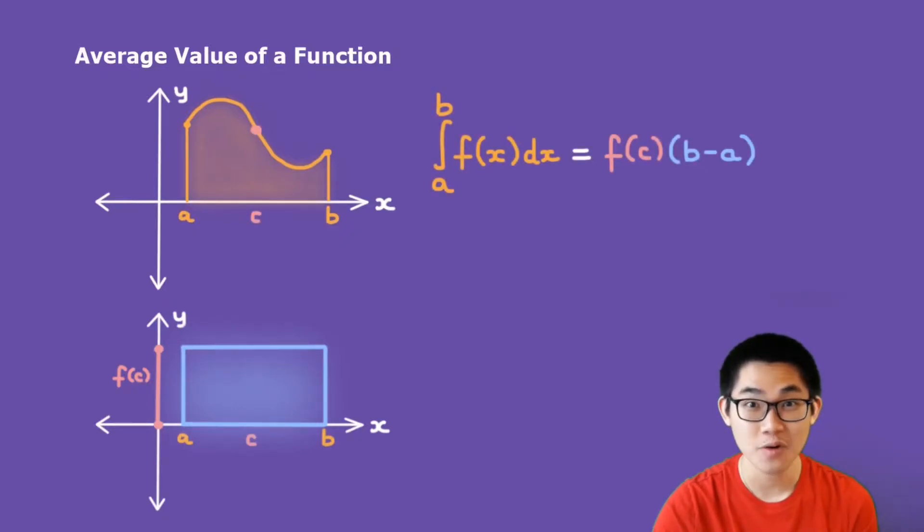Therefore, the formula is the integral from a to b of f of x dx. That's basically the area of this function right here. And that is equal to the area of this rectangle, which is the height f of c times the base b minus a. To find the average value, all you have to do is solve for f of c.